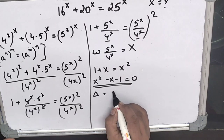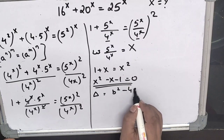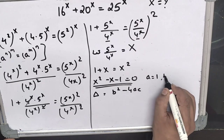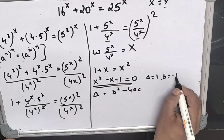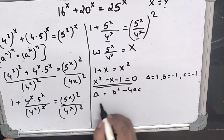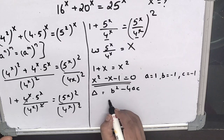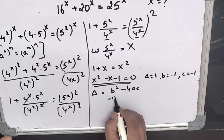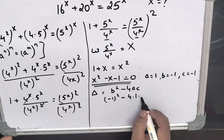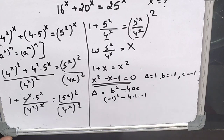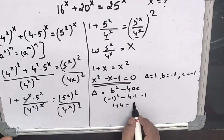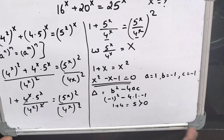We calculate the discriminant delta: b squared minus 4ac. Here a equals 1, b equals minus 1, and c equals minus 1. Substituting: (−1)² minus 4 times 1 times (−1) equals 1 plus 4, which is 5, and this is greater than 0.